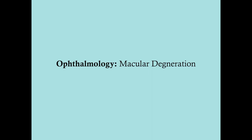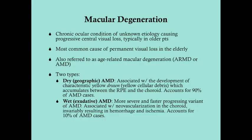We'll discuss macular degeneration, a chronic condition affecting the eyes. We don't know what causes it, but we know it causes progressive central visual loss. This is commonly seen in older patients — the older they are, the more likely they are to get it. This is age-related and is actually the most common cause of permanent visual loss in the elderly, meaning 60 plus.